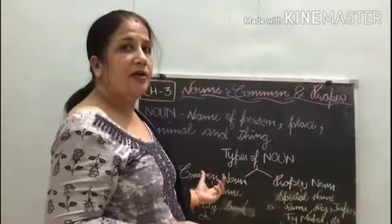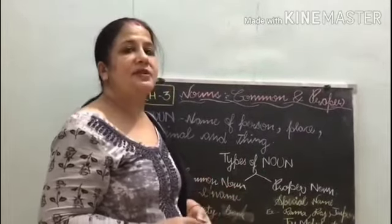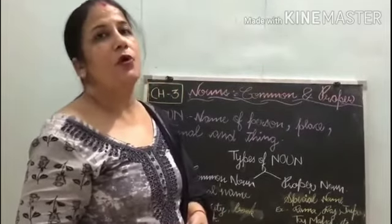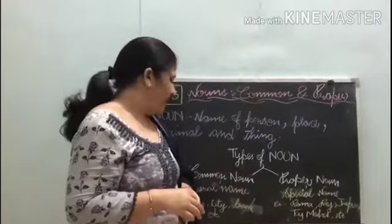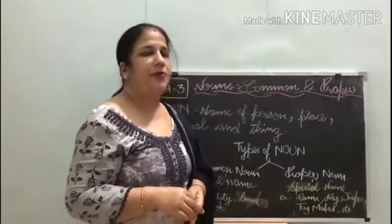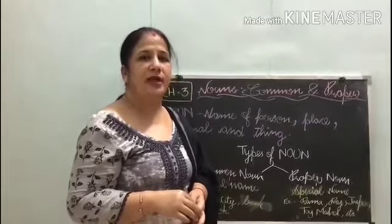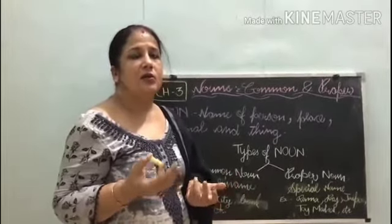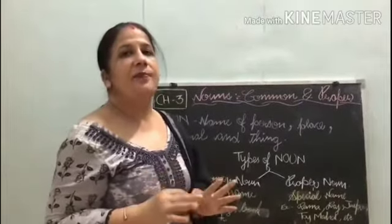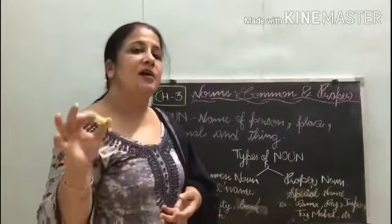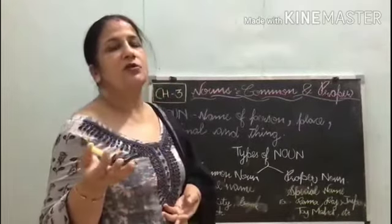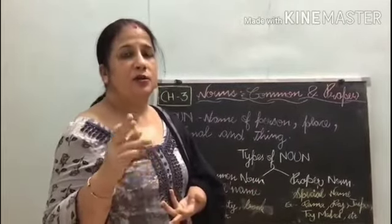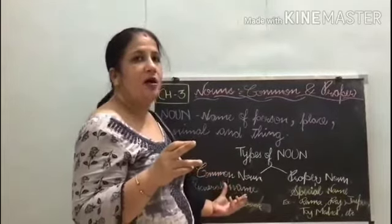Ab aapko sikse pehle dekhte hain. What are common nouns? Common noun ka general name hota hai — kisi bhi cheez ka general name. Woh kya hota hai? Common noun. Jaisi 'boy' — main aapko bolta hoon 'a boy', toh koon sa boy aapko pata nahi. For example: boy, city, and book. Kisi bhi cheez ka bhi pata nahi chal raha kaunsa boy hai. Particular name nahi use hota. Toh woh kya hai? Common noun. General name kya hota hai? Common noun.